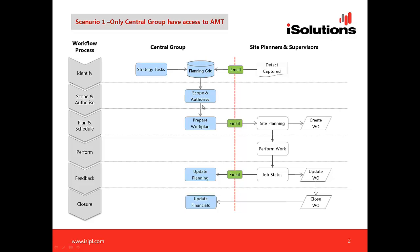The next step is the central group reviews and authorizes those items, ensuring the scope is correctly defined. From there, the central group communicates the work plan to the site or branch. The site goes through their normal process — creating a work order in DBS or their accounting system, ordering parts, planning and scheduling the work, performing the work, and then communicating completion back to the central group.